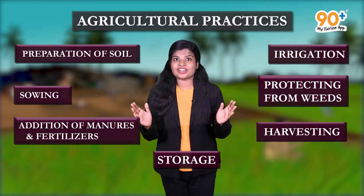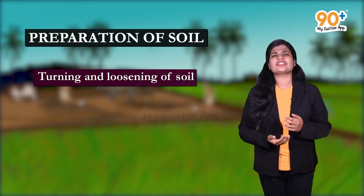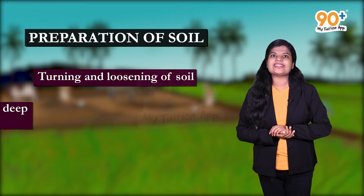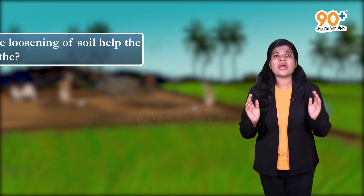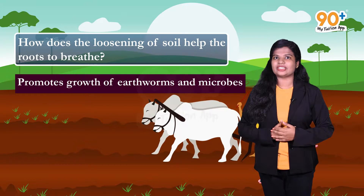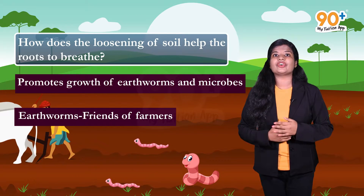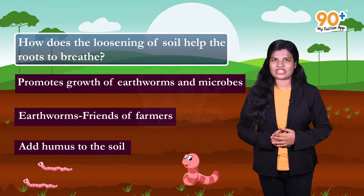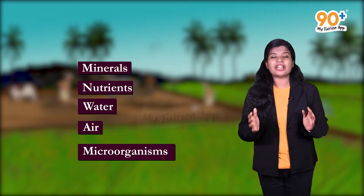Moving to the first and most important step — preparation of soil. In this step, the soil is turned and loosened for easy penetration of roots deep into the soil so that the roots can breathe. This step promotes the growth of bacteria and earthworms. Earthworms are also called friends of farmers — they help in further turning and loosening of soil and also add humus to the soil.